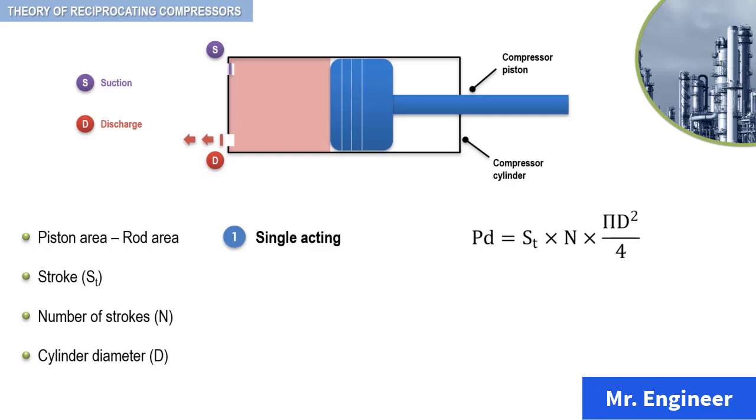Here, PD is the piston displacement, ST is the stroke, N the speed of the compressor, and capital D is the cylinder diameter.